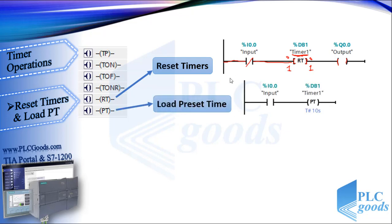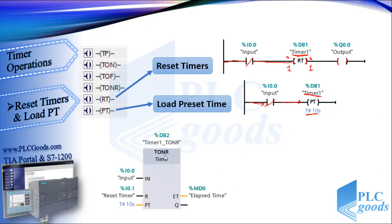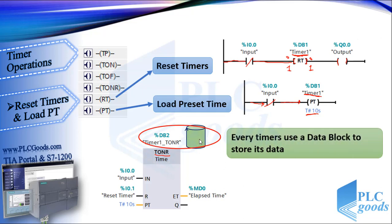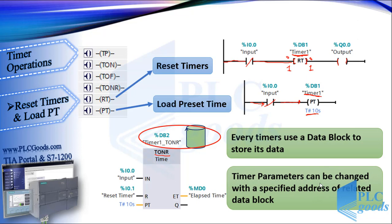With the second instruction, we can change the preset time of timers. Every timer uses a data block which is used to store its data, such as its preset time. So timer parameters can be changed with a specified address of the related data block. Let's see the three last instructions in TIA software — the others are similar.